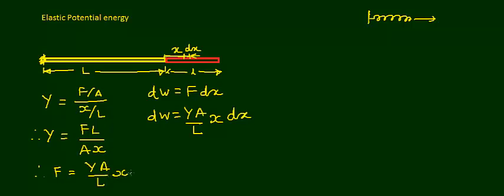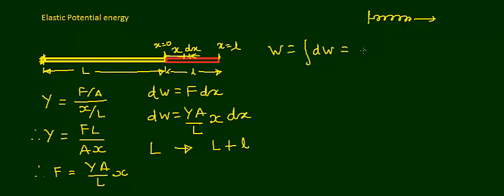To increase the original length from L to L+l, the value of x goes from 0 to l. So we use these limits for integration to find the total work done. Total work W = ∫dW = ∫(YA/L)·x·dx, with x from 0 to l.